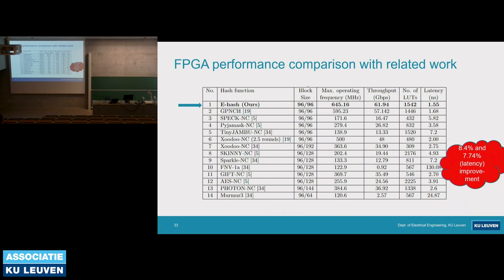Looking at other closely related work such as Zudo, Skinny, or Spec: these authors took a very good hash function and reduced the number of rounds to make it suitable for hardware implementation. The best one we found is Zudo — it remained resource efficient using 480 LUTs compared to ours, which is three times less. But as far as computational speed and throughput are concerned, we were able to outclass them.